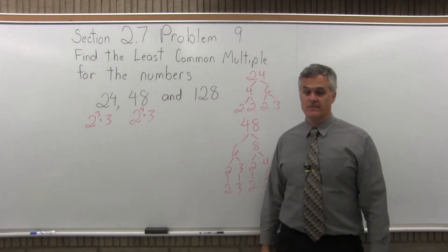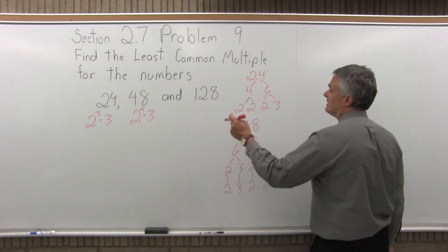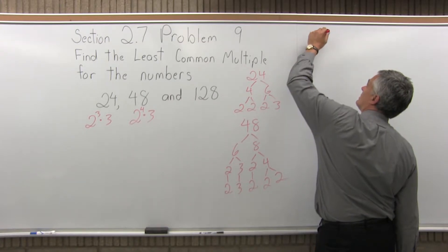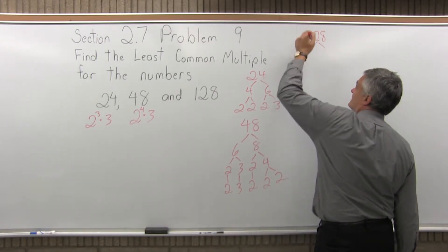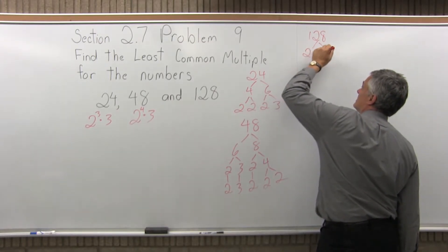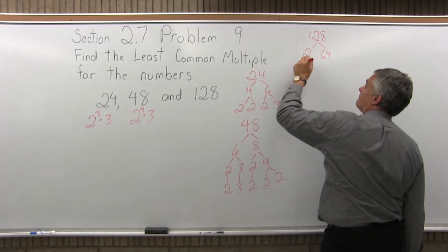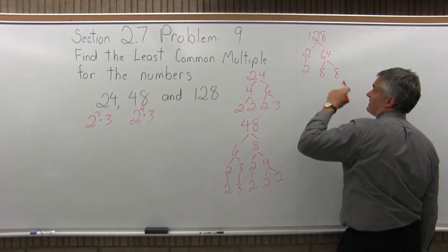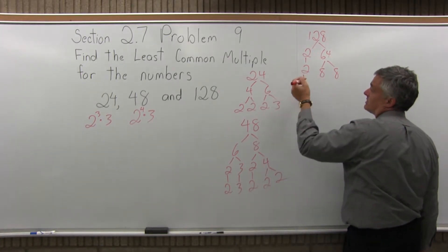Now, 128. I don't have room to go underneath any further on the board, so let's bring it up here. 128 is even, so it's 2 times 64. The 2 is done and comes straight down. The 64 is 8 times 8. At this point, I can see everything is going to come out to be a 2.